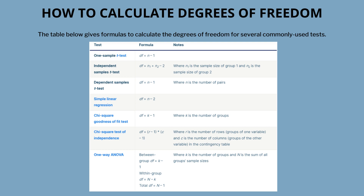How to calculate degrees of freedom: the degrees of freedom of a statistic is the sample size minus the number of restrictions — df = n − r — where n is the sample size and r is the number of restrictions, usually the same as the number of parameters estimated. The degrees of freedom can't be negative, so the number of parameters you estimate can't be larger than your sample size.